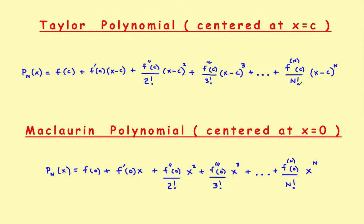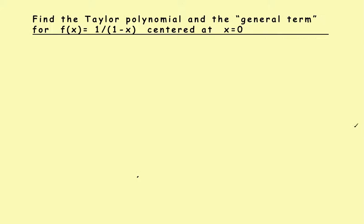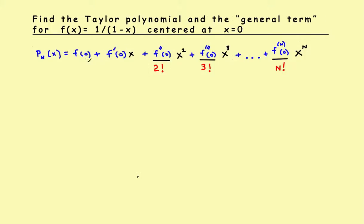At the end of this video, we'll take a look at why this particular function is important and why it fits in with those other four. Let's begin by deriving the polynomial just like we did in the previous videos. The definition of a general Taylor polynomial centered at some point x equals c is the top definition. And since ours is centered at 0, it's defined to be a McLaurin polynomial. We'll copy that definition down to make it easier to find the coefficients.